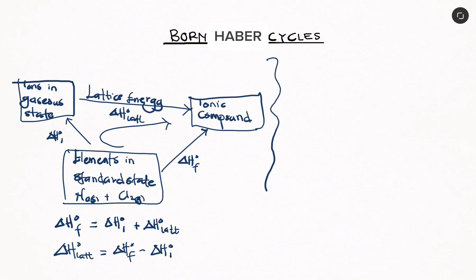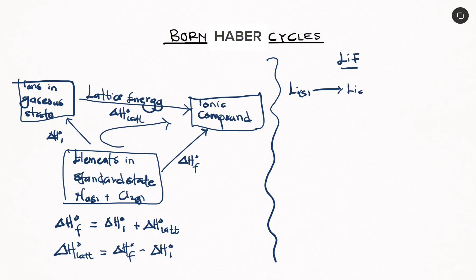So what are the steps involved in getting an ionic compound? I want us to do that with lithium fluoride. The first thing we are going to do is, since lithium is a metal and it's in the solid state, we need to convert it to gaseous lithium. The energy we need to do this is known as the enthalpy of atomization, delta H_AT. Some people may refer to this as enthalpy of vaporization, but the best term to use here is enthalpy of atomization.